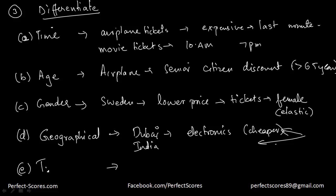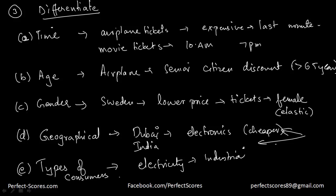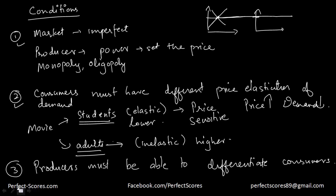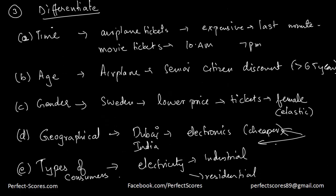You can also differentiate by types of consumers. For example, with electricity, you have industrial consumers and residential consumers, and the prices are different for each. These three conditions must exist for price discrimination to occur, and the third condition can be fulfilled in many different ways.